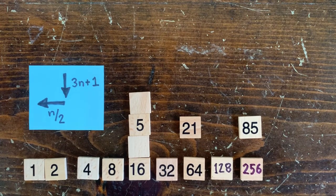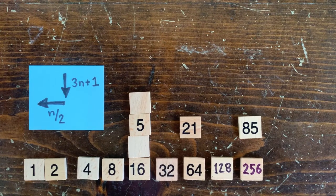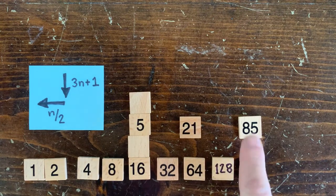We call these height 1 numbers. There are log x over 2 numbers of height 1. That's because every other power of 2 is reachable by some odd number by 3n plus 1.